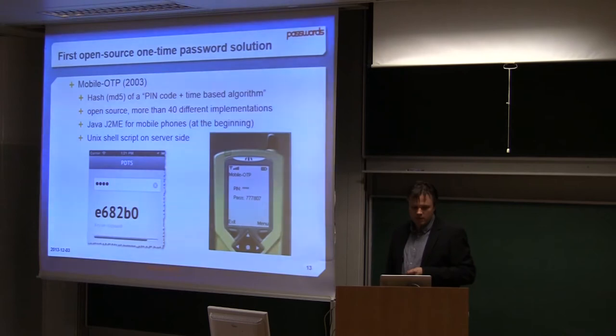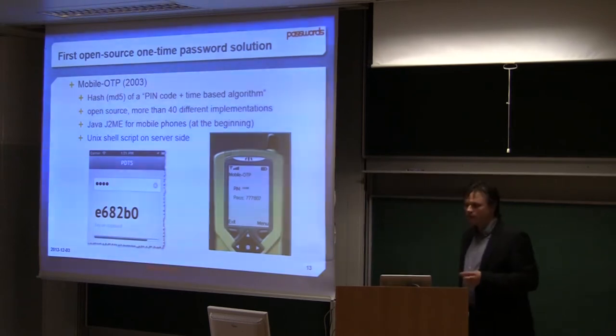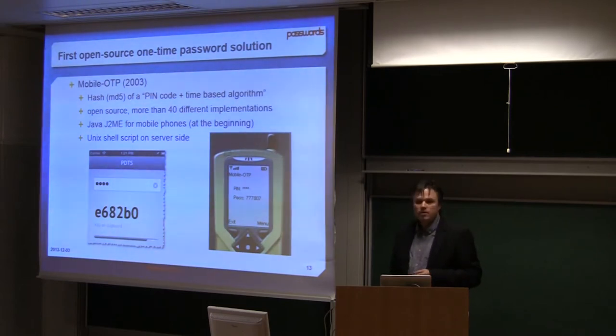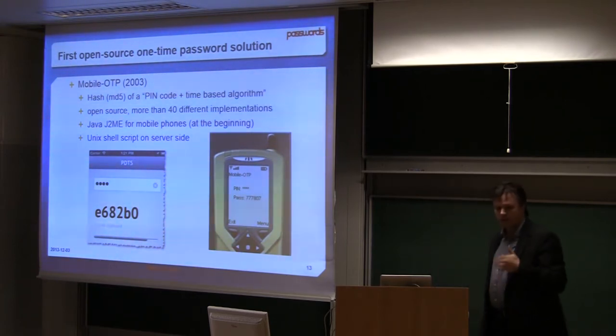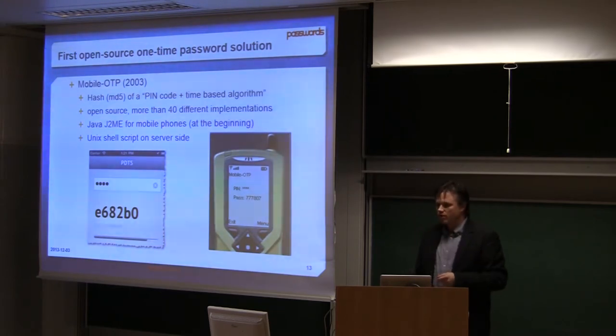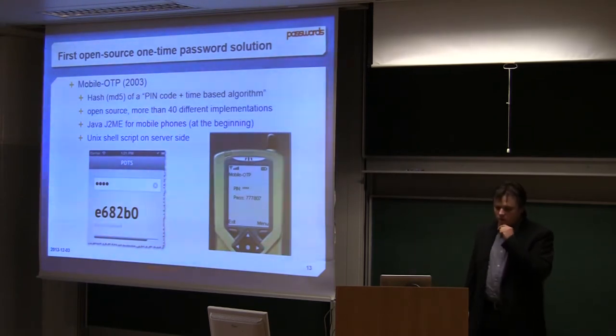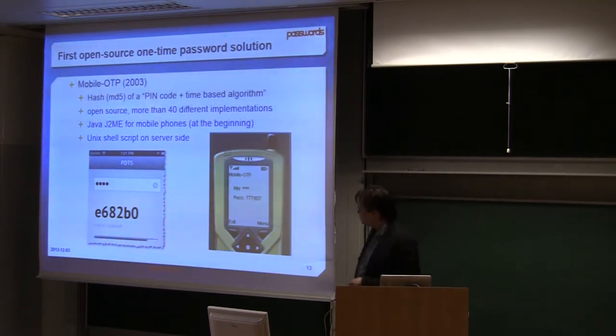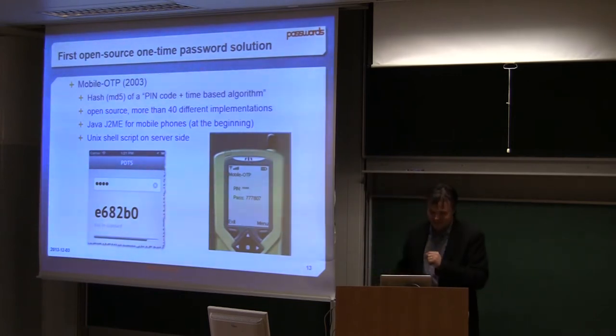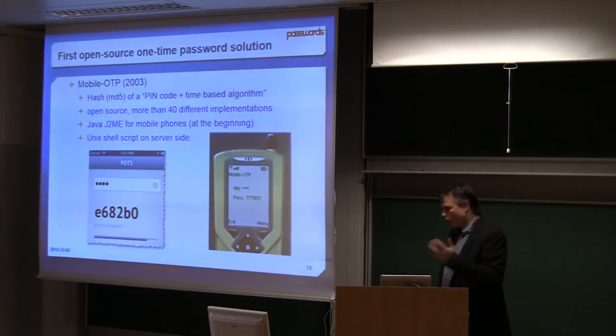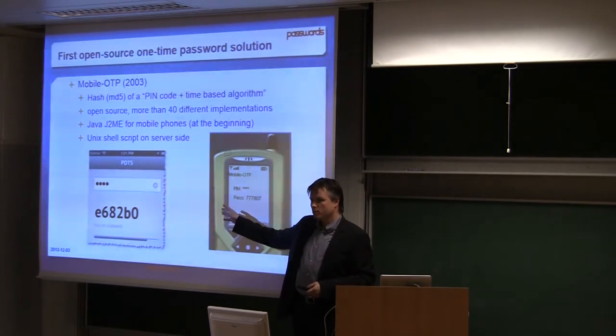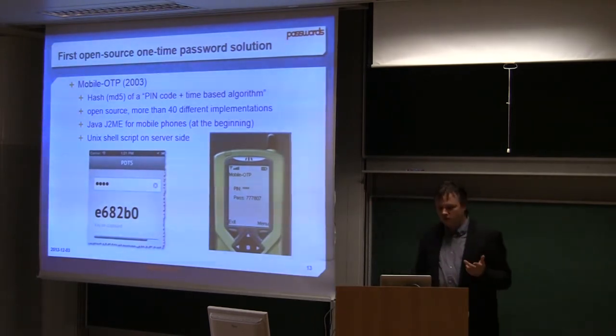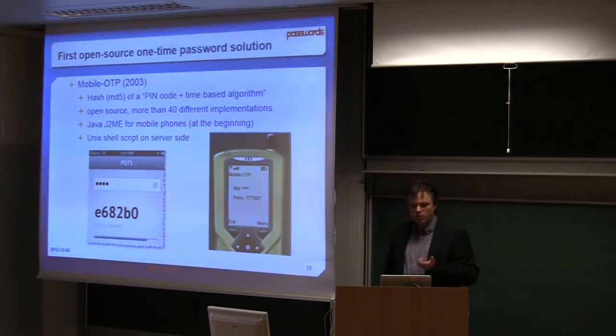The first open source one-time password solution that I remember was mobile OTP in 2003. It's a calculation of a hash with MD5, a mix of a pin code and the time. It's an open source with more than 40 implementations. The initial client was Java J2ME for old Nokia phones. Now there is for iPhones and Android or whatever. It's pretty nice but it's open source but not standardized. That's why it's not very used in a lot of places, but we used that at the beginning.